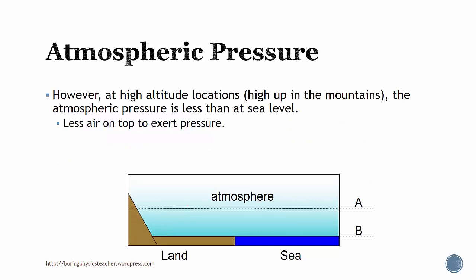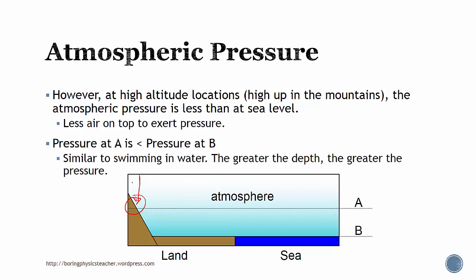However, at higher altitude locations, such as higher in the mountains, the atmospheric pressure is less than at sea level. It is because there's less air on top to exert that pressure. Comparing A and B, the pressure at A is actually less than pressure at B. A person at A has only this amount of air pressing on him, but at B, there's actually more pressure. It's similar to swimming in water. The greater the depth, the greater the pressure.